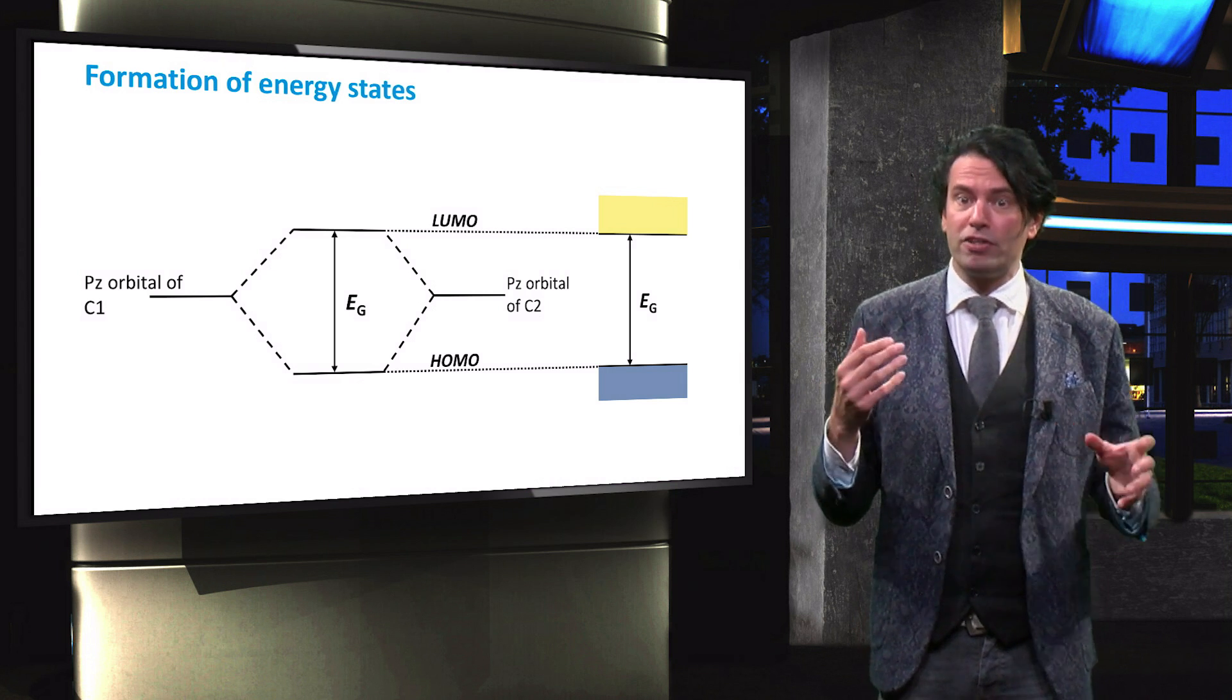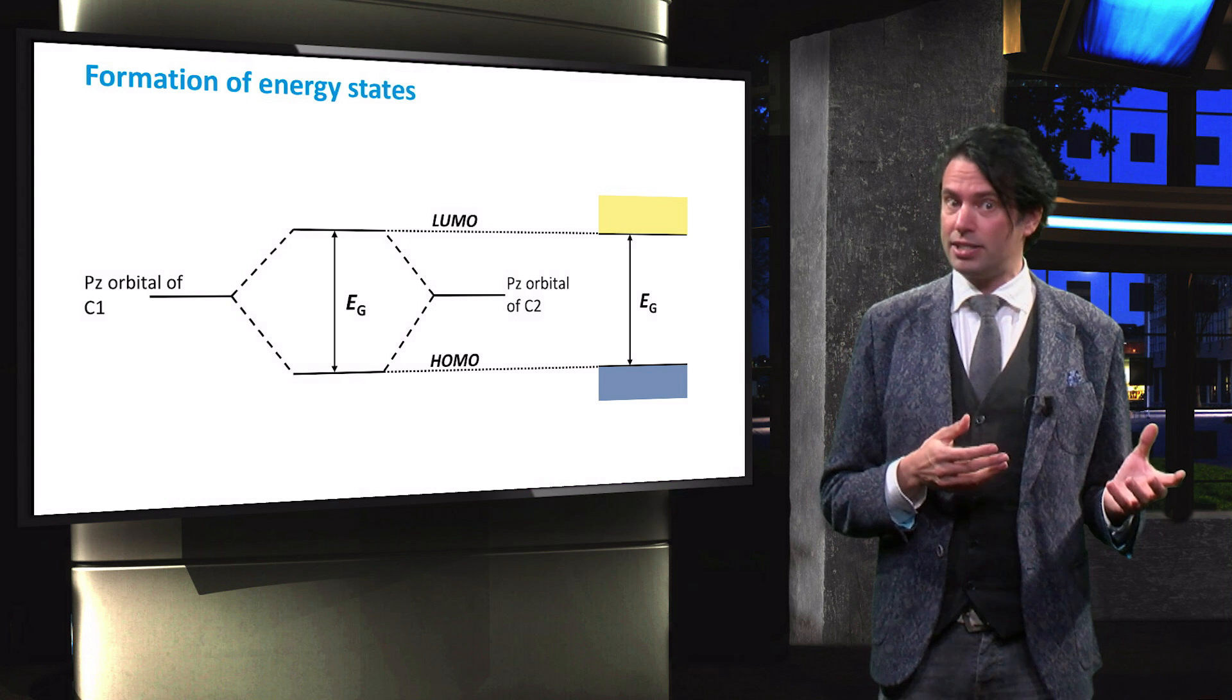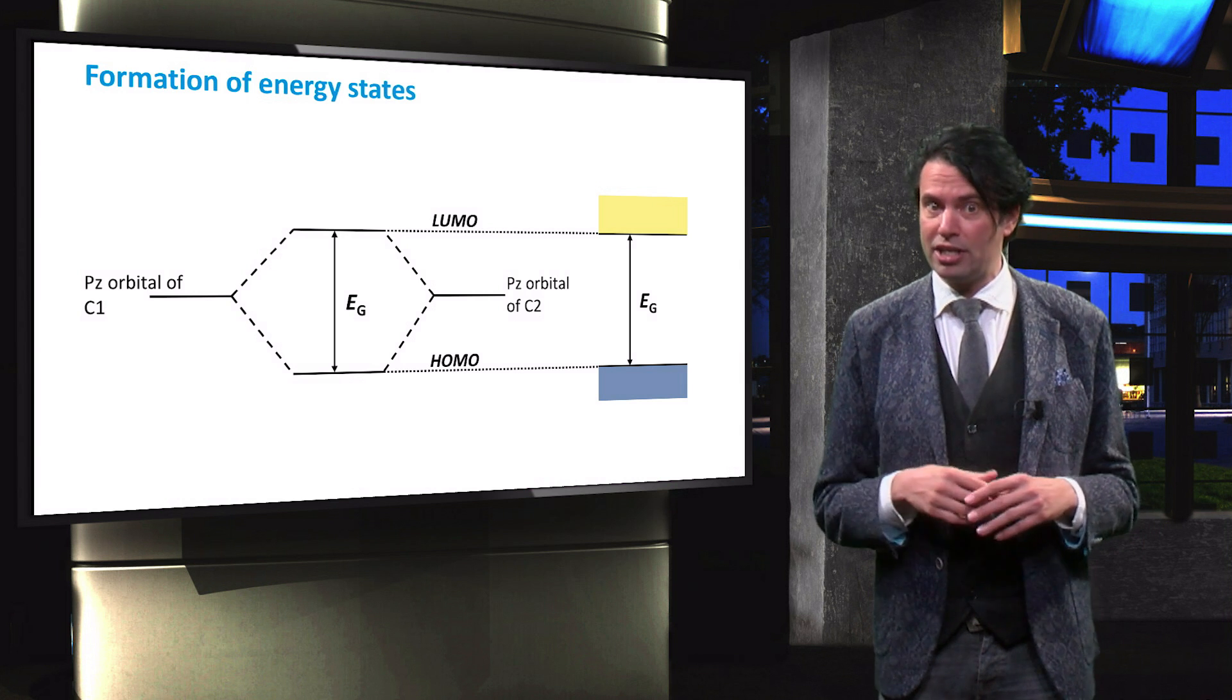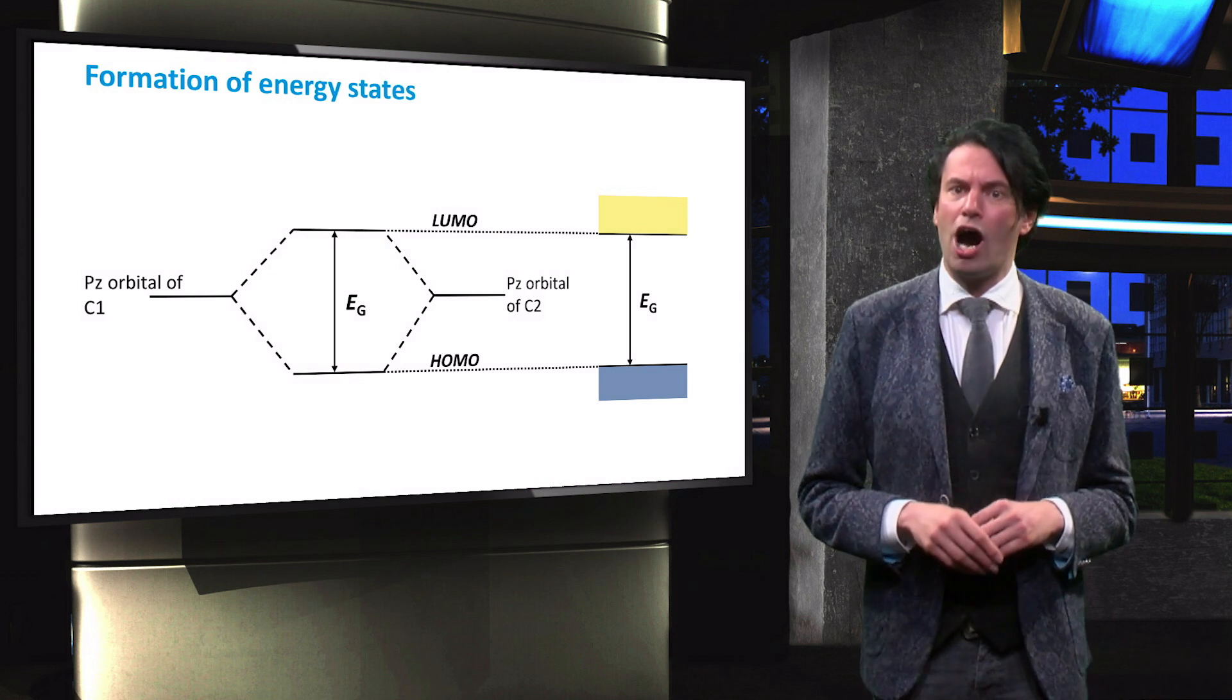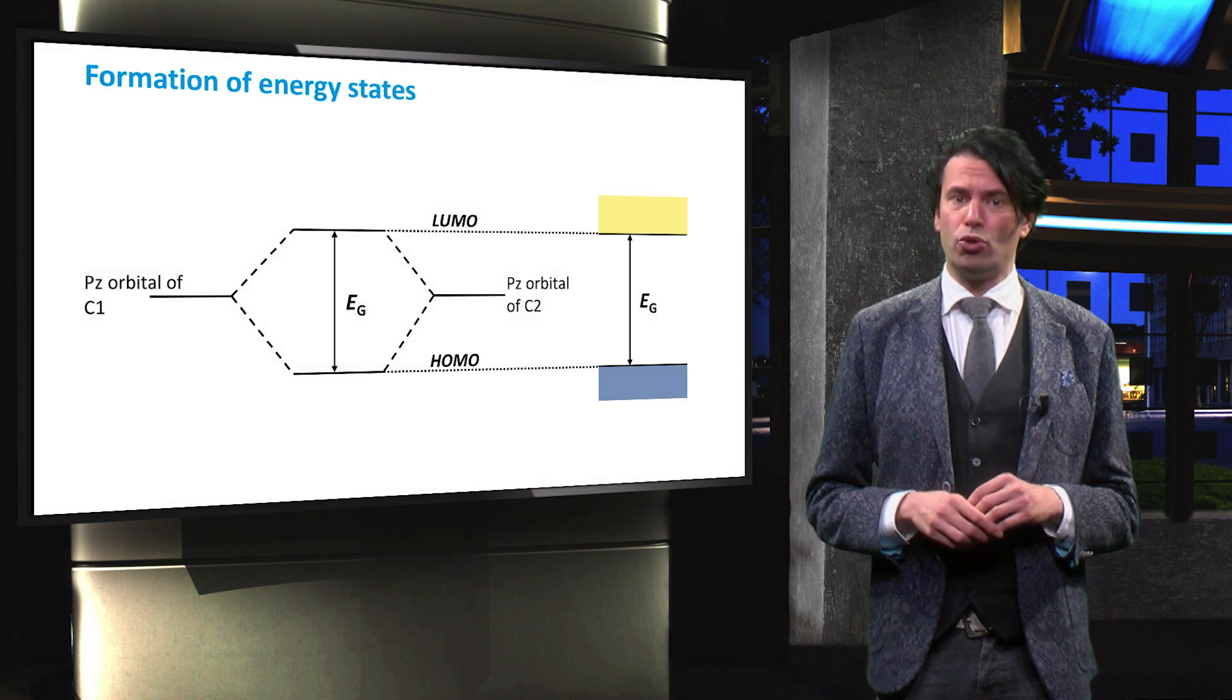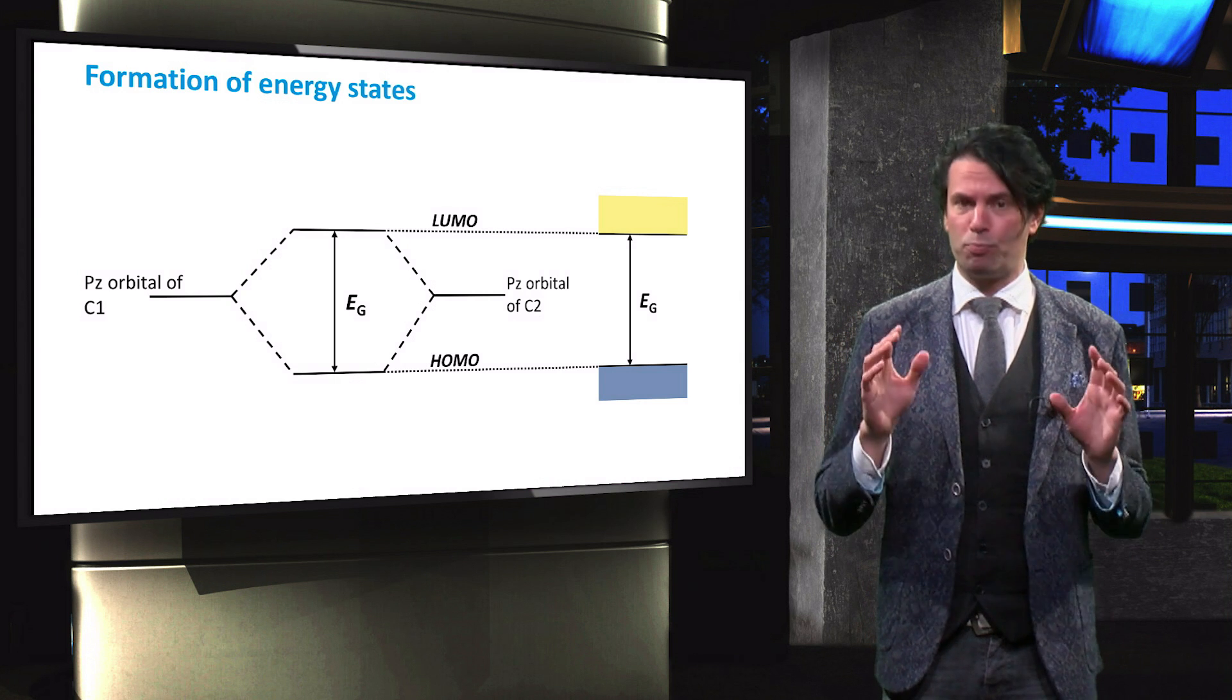The HOMO is therefore equivalent to the valence band edge in semiconductors and the LUMO is equivalent to the conduction edge. This is how organic materials can show semiconductor-like properties.